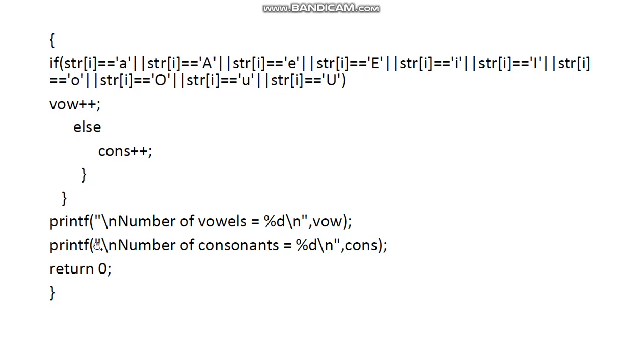The next step is the output. Here, the output is simple. Just we need to print the number of vowels that are found in the variable vowel and the number of consonants that are found in the variable cons. So, that's about the program.